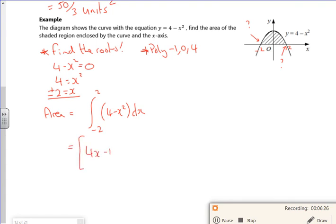So I've got 4x minus a third x cubed between minus 2 and 2.